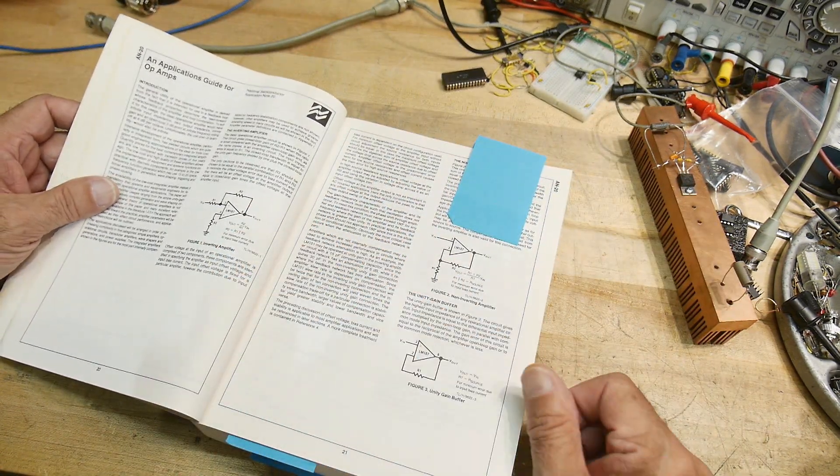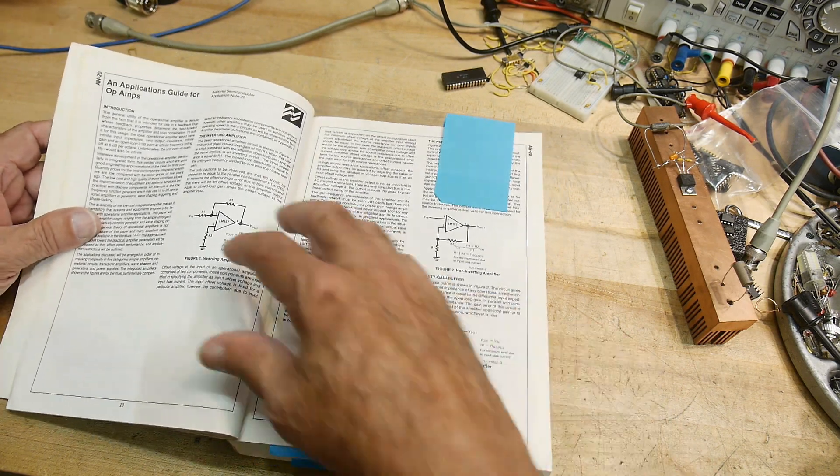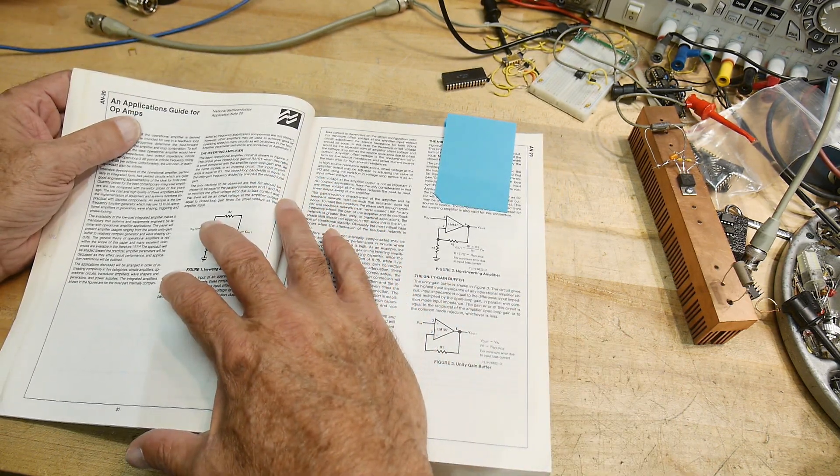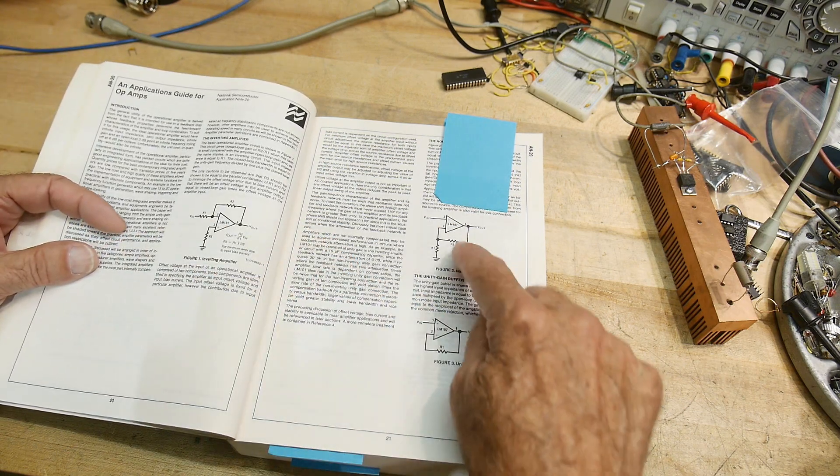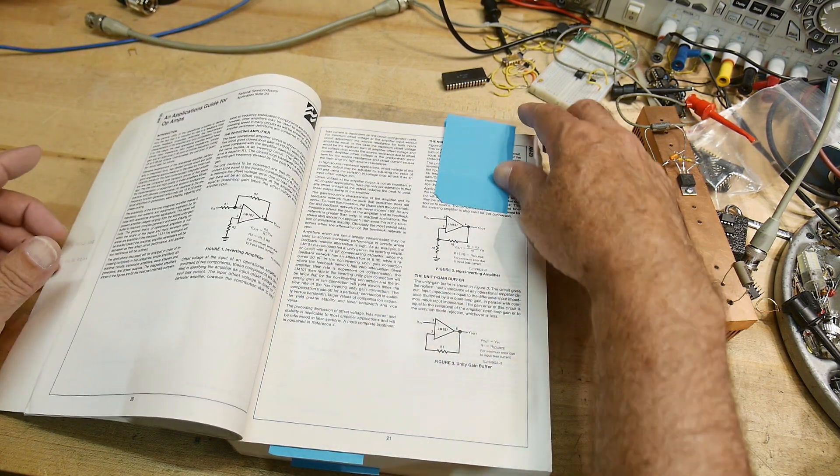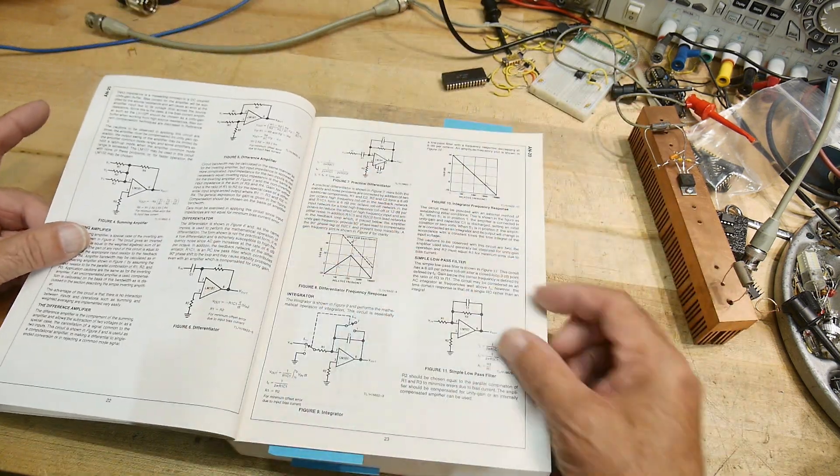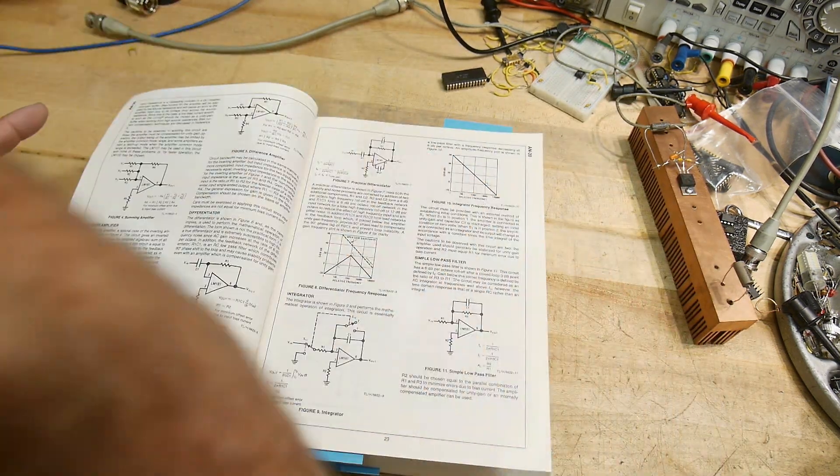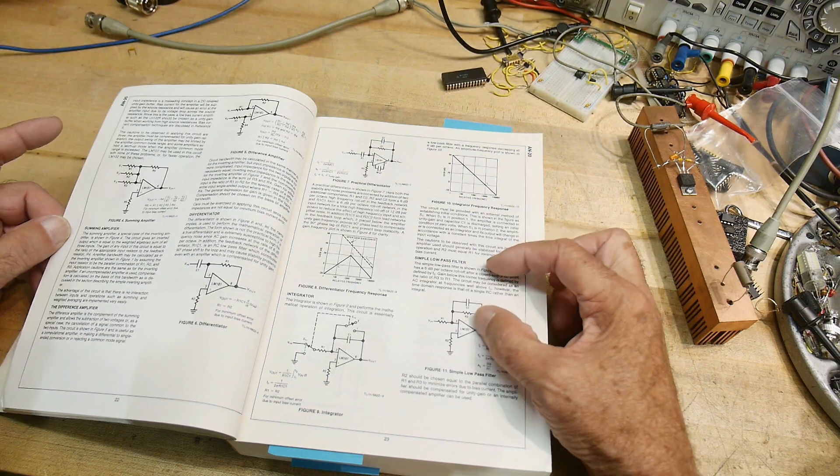But app note 20. AN20. This is an applications guide for op amps. And it goes through normal configurations of op amps and why you might want to do this. And it's very, very terse. There's not much writing.